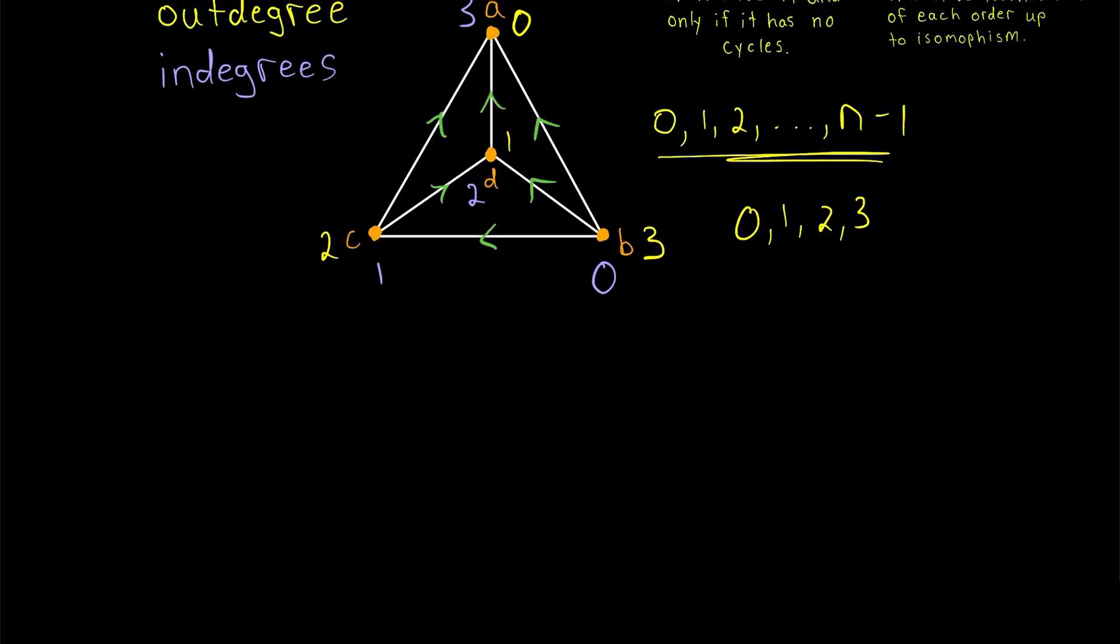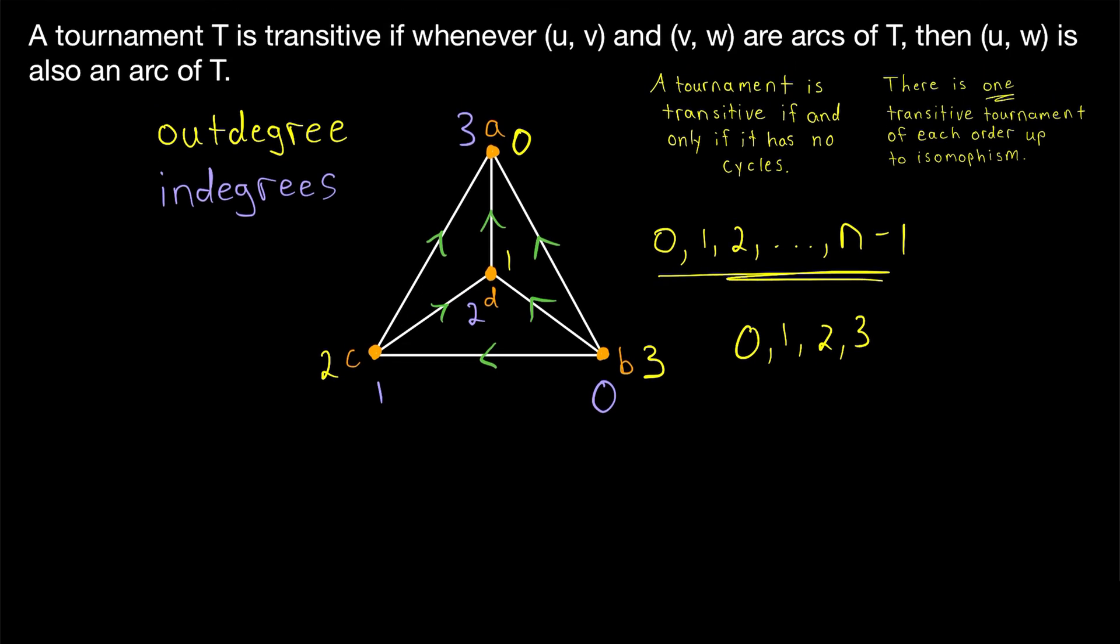But that's it for now. That is a little bit about transitive tournaments. A tournament is transitive if whenever (u,v) and (v,w) are arcs of the tournament, then (u,w) is an arc as well.